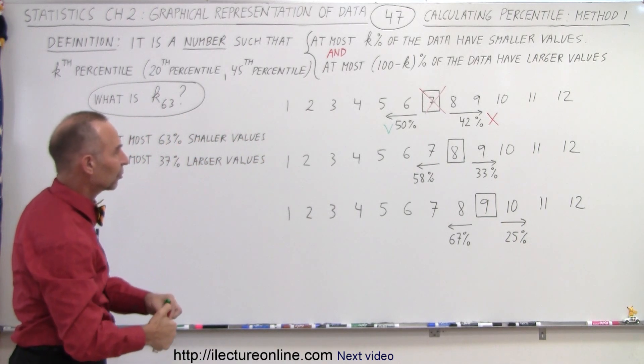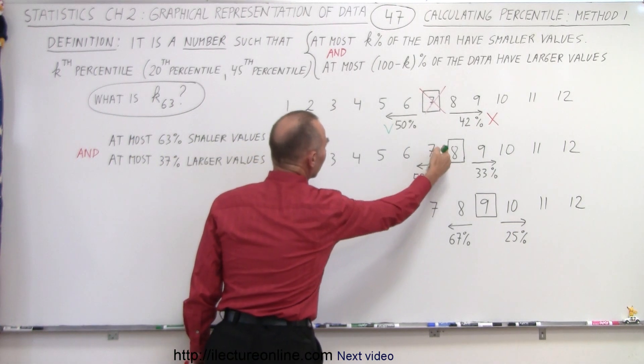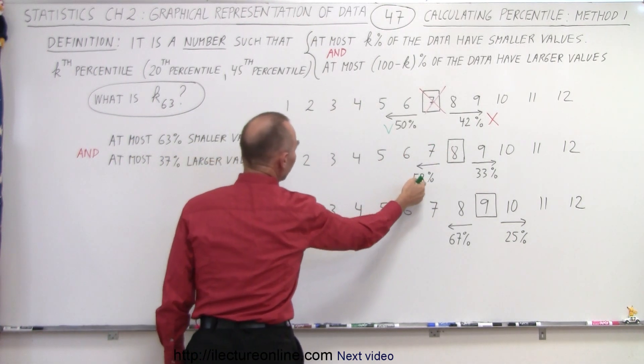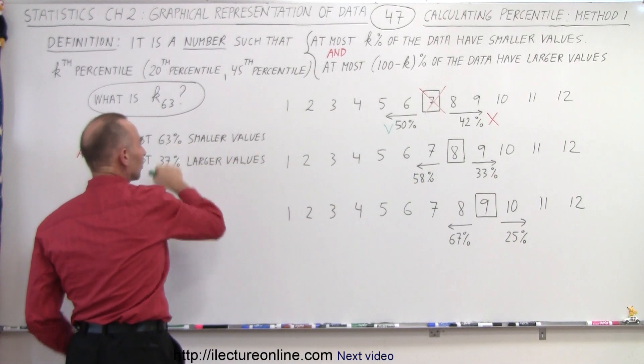Alright, let's look at the next one. Notice here we said that if we pick number 8, there's 7 values or 58% of all the data points that have smaller values, which meets the condition.